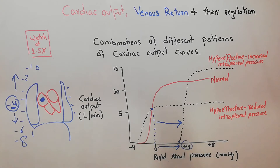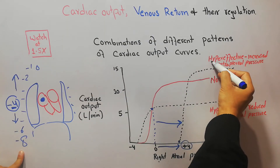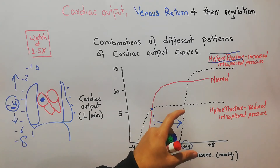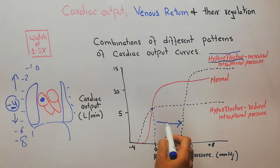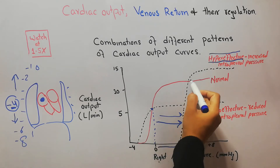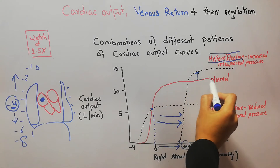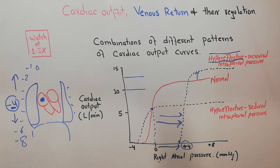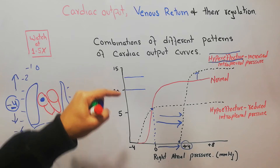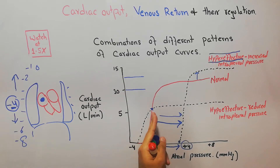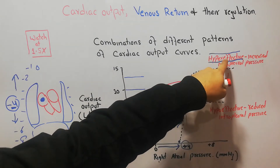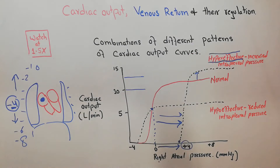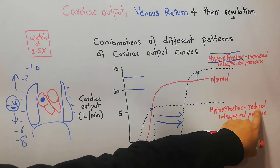At the same time, if the heart is hyper-effective — if the heart rate and the power of contraction are greater than normal — then not only does this curve shift rightward, but it also shifts above the normal level. If the normal cardiac function curve plateaus at 10 liters per minute, a hyper-effective heart will pump more, around 12 or 13 liters per minute. So increased intrapleural pressure shifts the curve right, while a hyper-effective heart shifts the plateau upward.